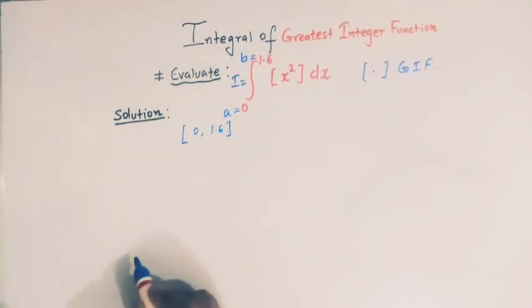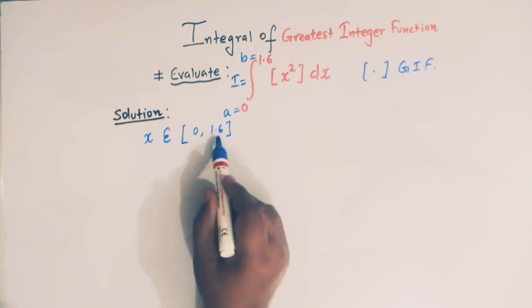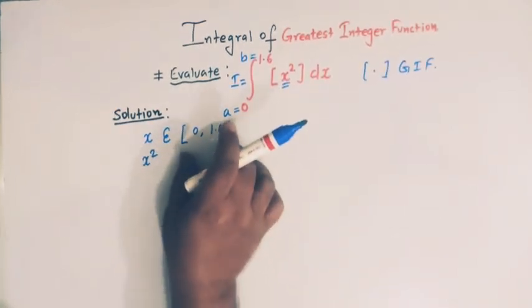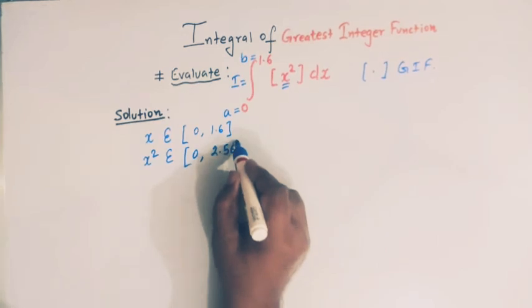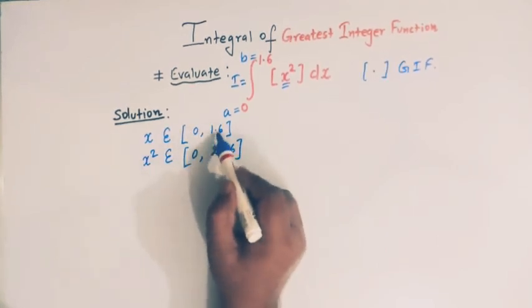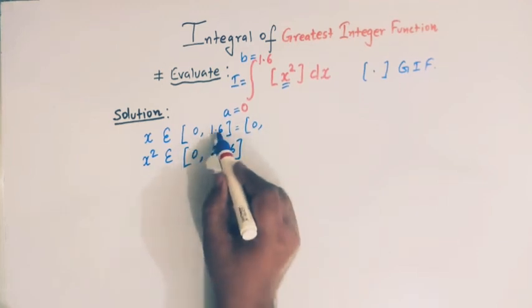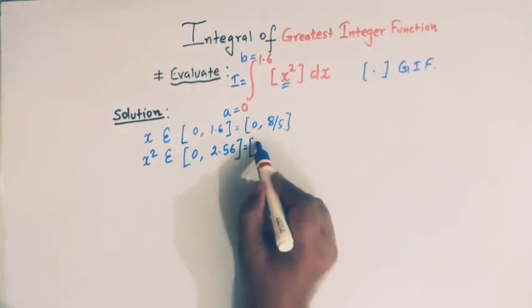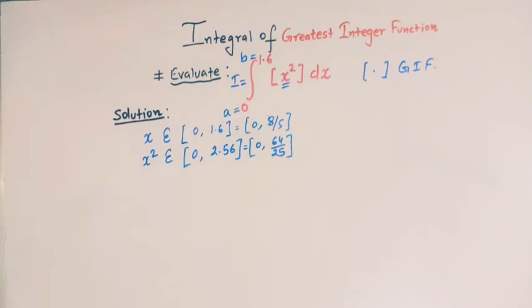We have to integrate this function in the interval 0 to 1.6, so x belongs to [0, 1.6]. Since we have x squared, when x belongs to this interval, x squared belongs to [0, 2.56], because the square of 0 is 0 and the square of 1.6 is 2.56. We can also write 1.6 as 8/5 and 2.56 as 64/25.